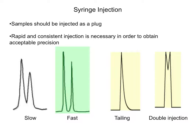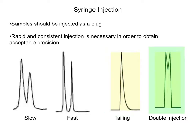Peaks can also exhibit tailing, such as the third peak. This occurs when you inject too much material, causing the sample to spread out in the column. Finally, if you stutter during the injection, you are effectively double-injecting and will get extra peaks. The last diagram illustrates this effect.